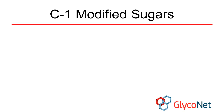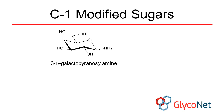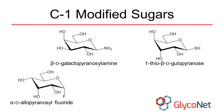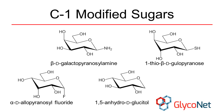Carbohydrates modified at C1 are often encountered in synthetic carbohydrate chemistry. Amine-modified sugars are named as glycosyl amines, while the addition of halogens results in glycosyl halides. Thio-sugars specify that the substitution is at C1, both in the reducing sugar and in thioglycosides. Replacement of the anomeric alcohol with hydrogen results in an anhydroalditol, as a water molecule is lost in its creation.